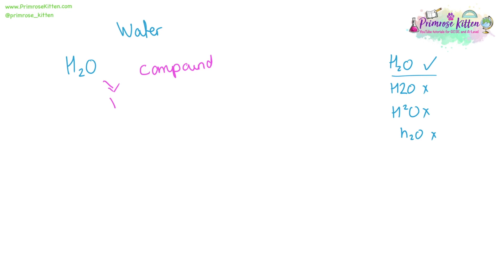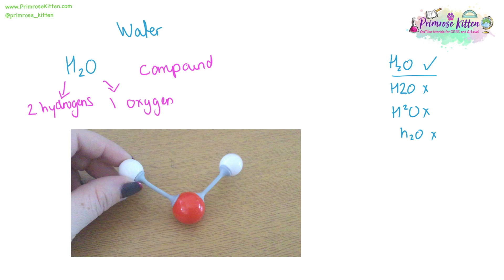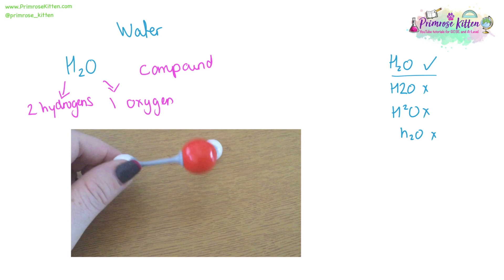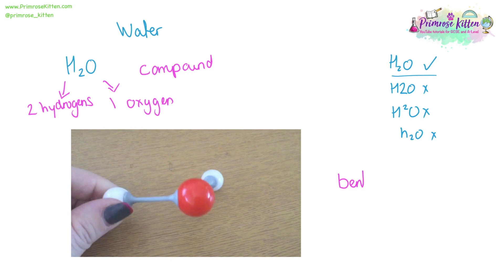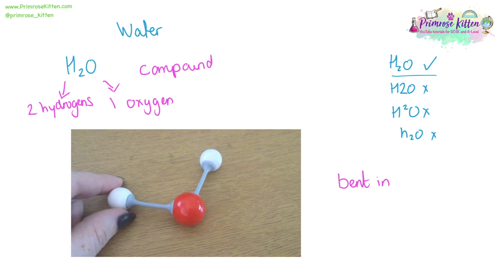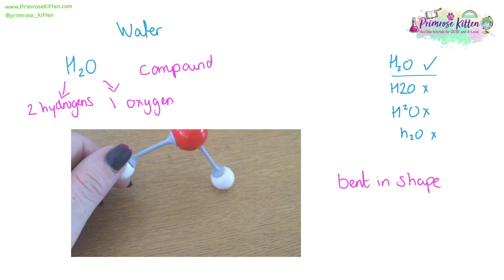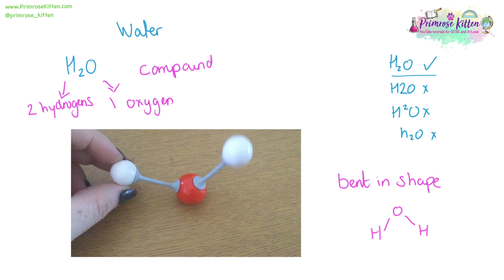Now water, H2O, is a compound that is made up of one atom of oxygen and two atoms of hydrogen. The shape of water is bent. We can see it has an angle there between the two bonds for the hydrogen. So you will see it drawn like this.